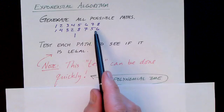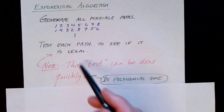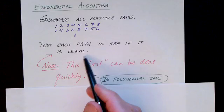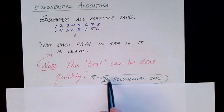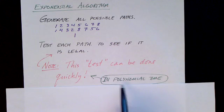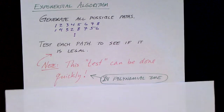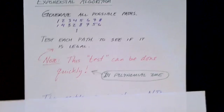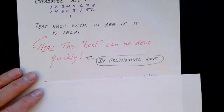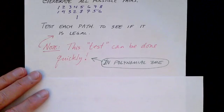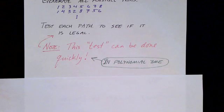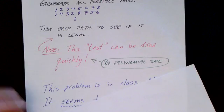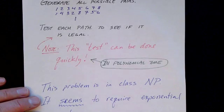So the idea here is that we test each path to see if it's legal, and the test can be done quickly. We can test each candidate solution in polynomial time. But there are exponentially many possible paths. And so the best algorithm that we've been able to come up with for this problem requires exponential time. So it seems that this problem requires exponential time, in spite of its superficial similarity to the other path problem.